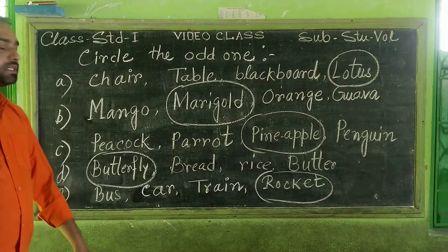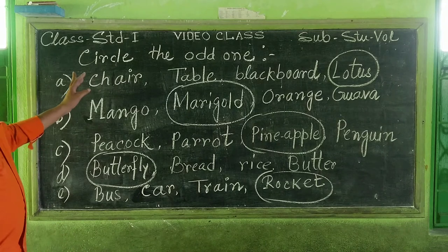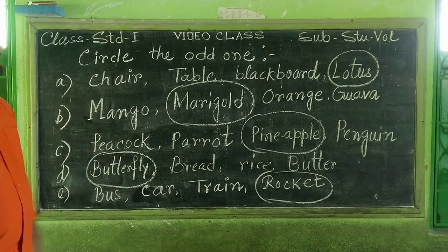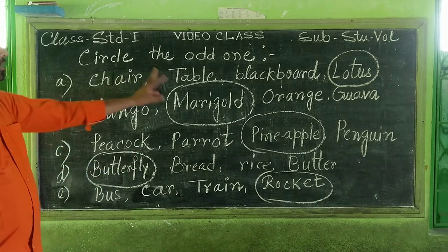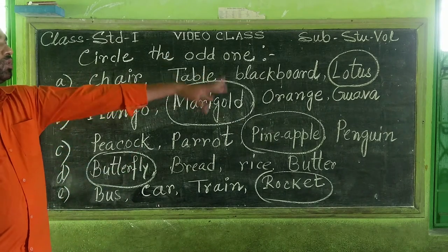That is our class — Satyala Orba. To review: chair, table, blackboard, lotus. The odd one out is lotus. Mango, marigold, orange, guava — the odd one out is marigold.